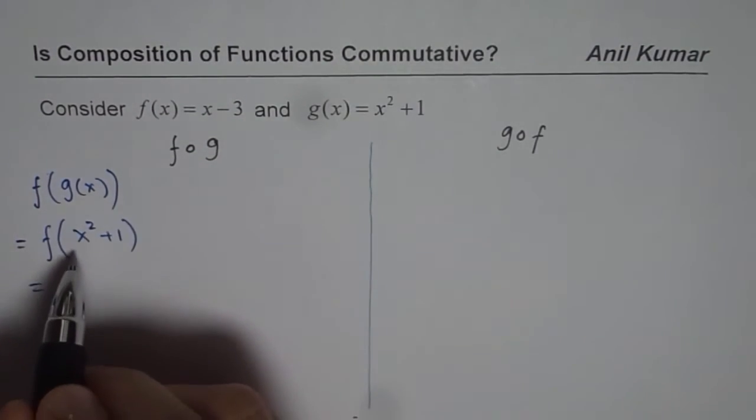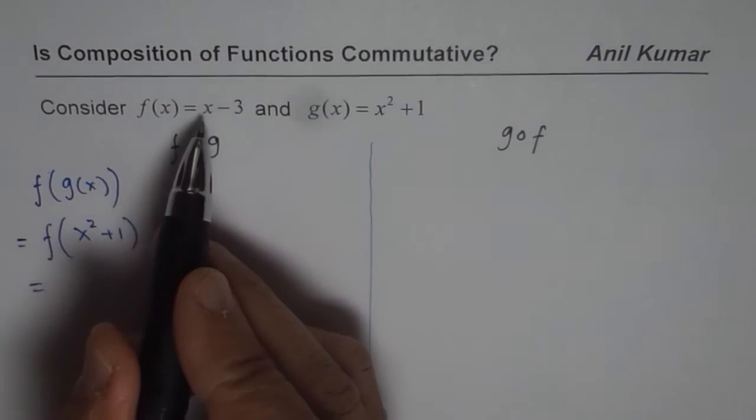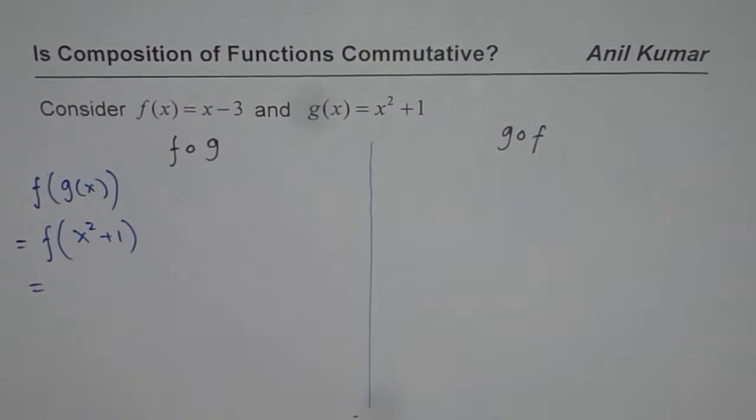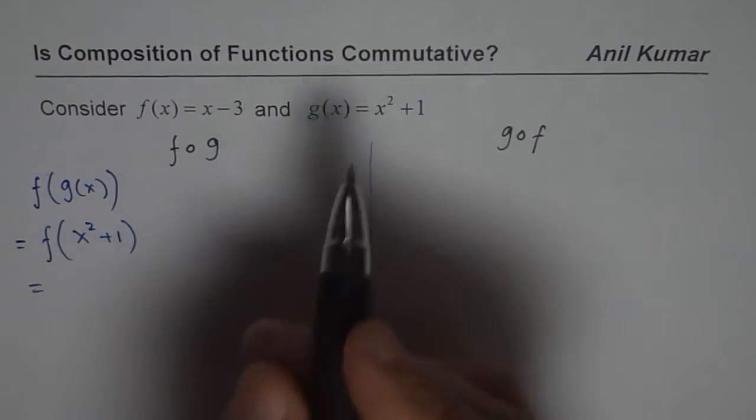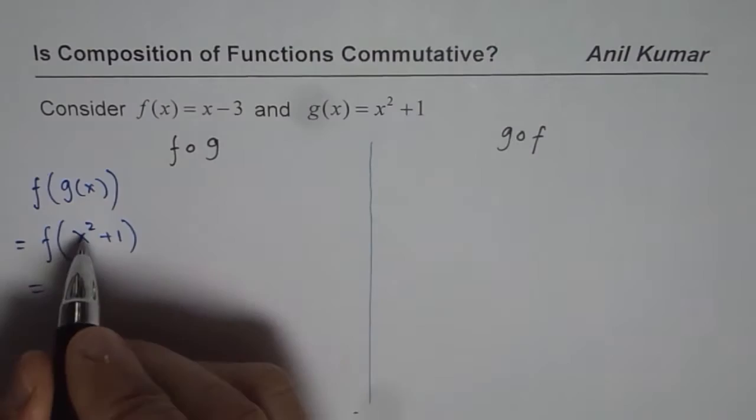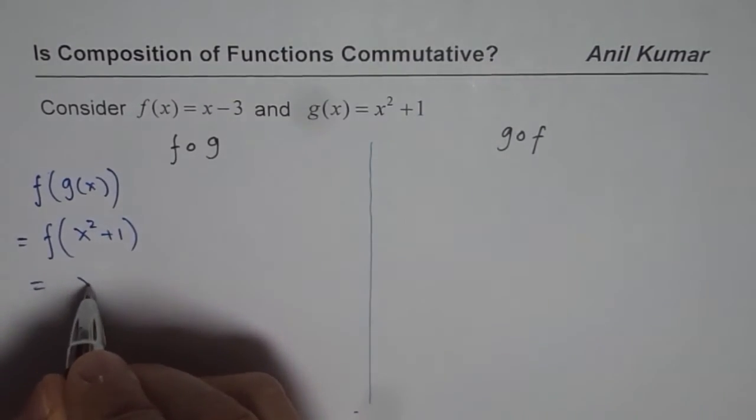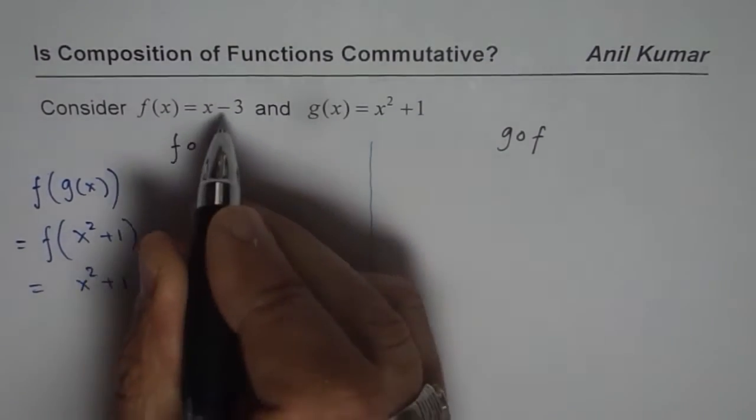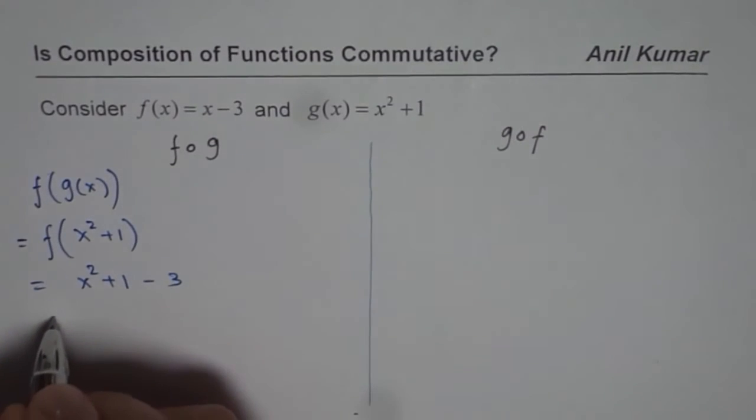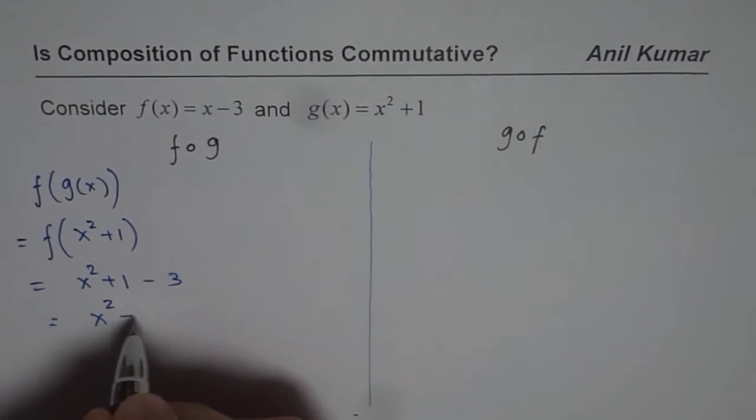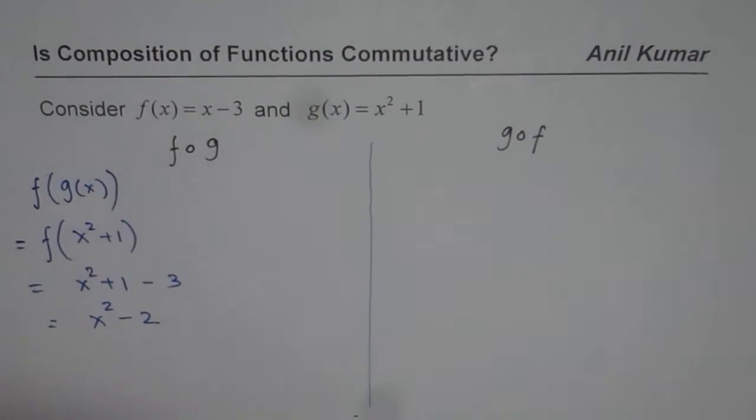So we will substitute x squared plus 1 in f(x). Composition is always substituting a function into another function. So we substitute this function into the first function. So we get instead of x, I am writing x squared plus 1 and we have minus 3 there. So we get x squared minus 2 as f of g.